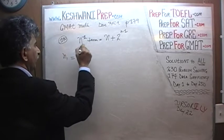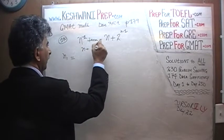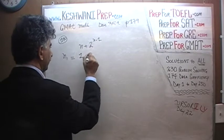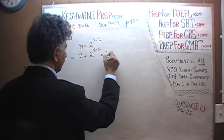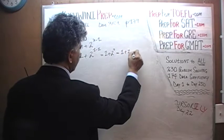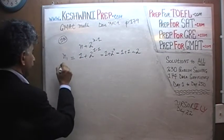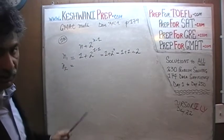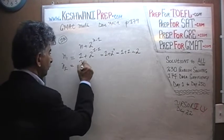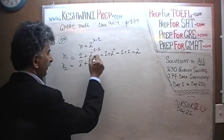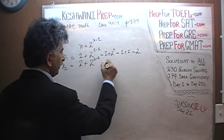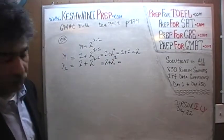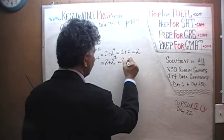Let me redo this. n1 equals — here's the formula — n plus 2 raised to n minus 1. So 1 plus 2 raised to 1 minus 1, which is 1 plus 2 raised to 0, which is 1 plus 1, which is 2. Similarly, the second term: wherever we see n in this expression, we replace that n with 2. The second term will be 2 plus 2 raised to 2 minus 1, so it's 2 plus 2 raised to 1, which is 2 plus 2, which is 4.